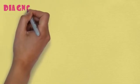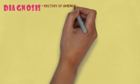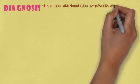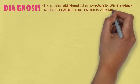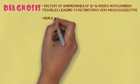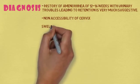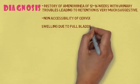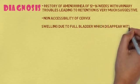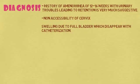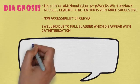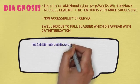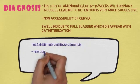Next is diagnosis. We use differential diagnosis because it can be confused with some other disorders. We check the history of amenorrhea of 12 to 16 weeks with urinary troubles leading to retention — this is very suggestive of retroverted gravid uterus. Non-accessibility of the cervix is noted, as the cervix position changes upwards and forwards. Swelling is due to the full bladder and will disappear on catheterization.